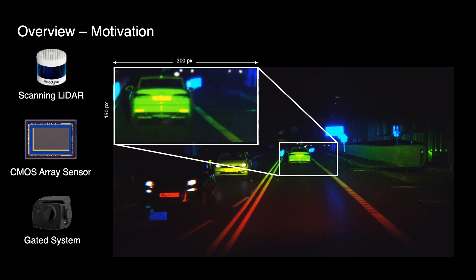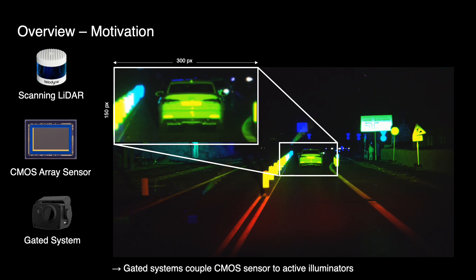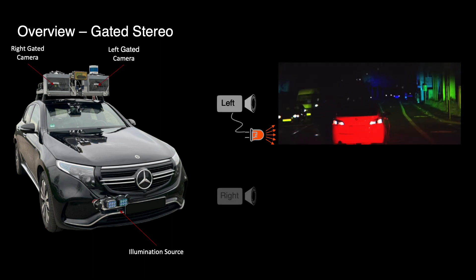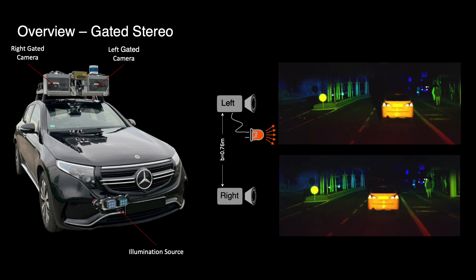Gated imaging allows us to overcome the sparsity of lidar with the density of an imaging array by combining a CMOS image array with an active illumination source. We built a prototype with the gated stereo system consisting of a flash illumination source, a left gated camera and a right gated camera.